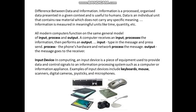What is the difference between data and information? Information is processed, organized data presented in a given context and is useful to humans. Data is an individual unit that contains raw material which does not carry any specific meaning. Information is measured in meaningful units like time, quantity, etc. All modern computers function on the same general model of input, process and output. For example, input means typing a message and pressing send; process means the phone's hardware and network process the message; output means the message goes to the receiver.